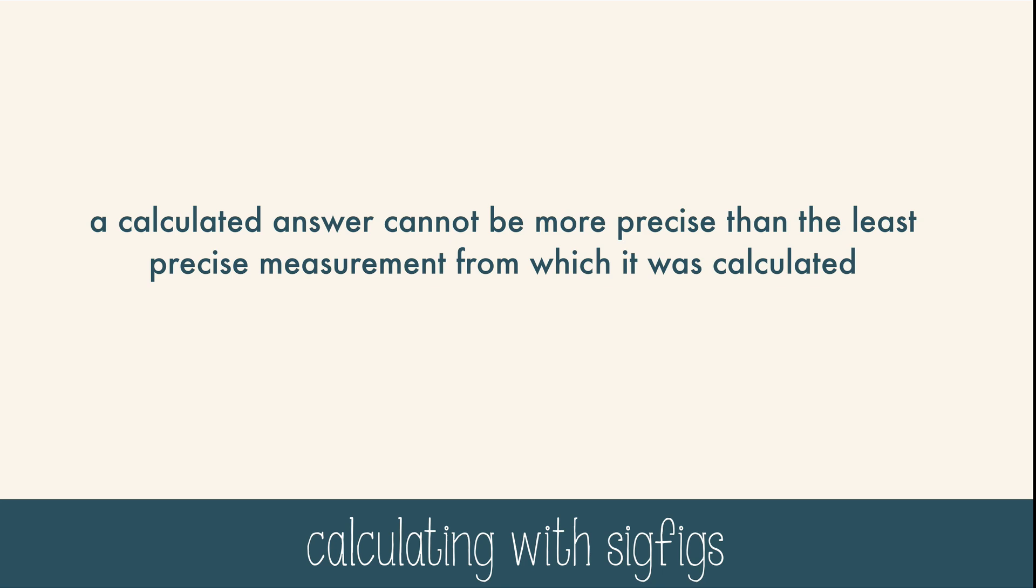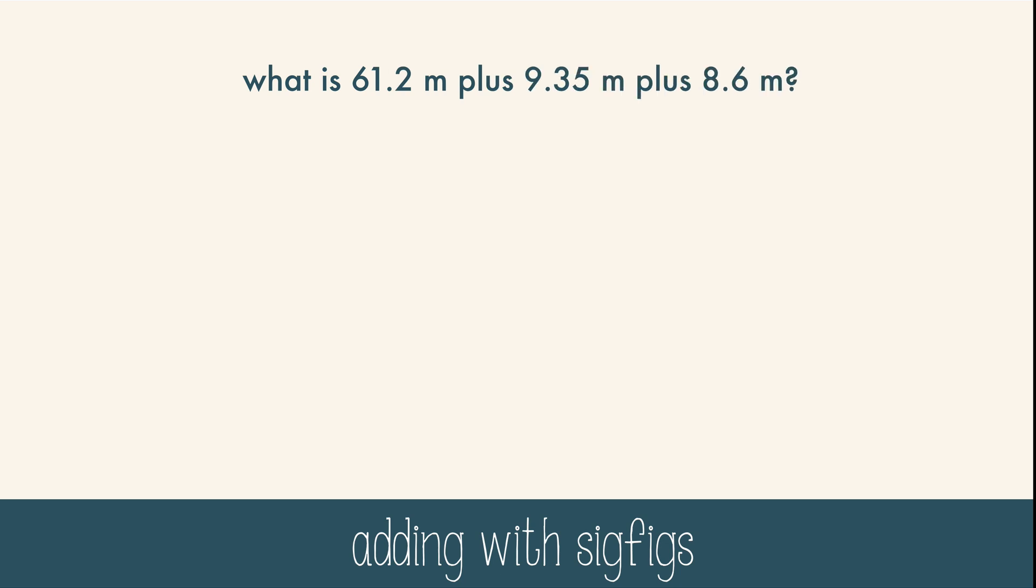Let's look at an example for adding significant figures. What is 61.2 meters plus 9.35 meters plus 8.6 meters? The first thing you need to do is line up the decimals. Then you can do the math. Then you need to find the least significant digit. In this case it's the tenths place. There's where our answer needs to end. Look at the number to the right and round up if it's 5 or higher, round down if it's 4 or lower. So in this case our answer is 79.2 meters.